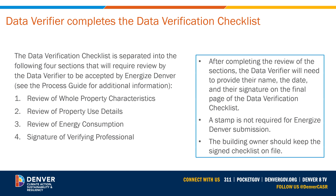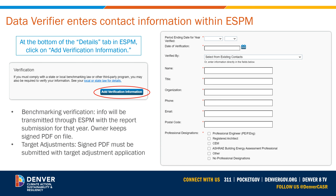Please note that a stamp is not required for Energize Denver submissions. Once received, the building owner or responsible party will keep the checklist on file to then submit the target adjustment. In addition to generating and completing the data verification checklist, the data verifier must provide contact and verification information. For benchmarking year verification, start by going into the Details tab and click on Add Verification Information. Fill out all requested information and confirm. For target adjustment data verification, a signed PDF file must be submitted with the target adjustment application.